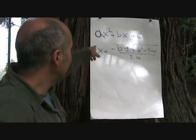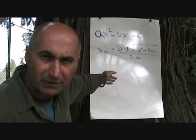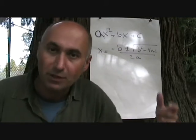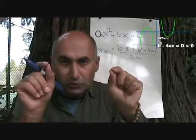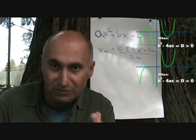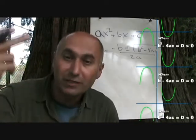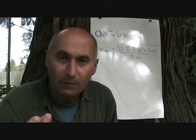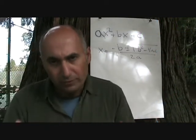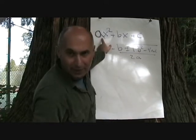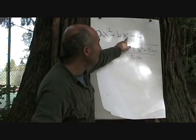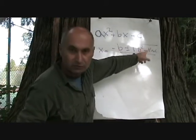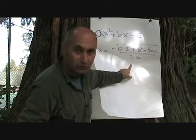So far, we've learned about the quadratic formula and done examples where the discriminant is greater than zero, equal to zero, and less than zero. Greater than zero gives you two x-intercepts, equal to zero gives you one x-intercept, and less than zero gives you no x-intercepts. The terminology you'll encounter is: if you have a quadratic equation ax² + bx + c, you can factor it as x = (−b ± √(b² − 4ac)) / 2a.